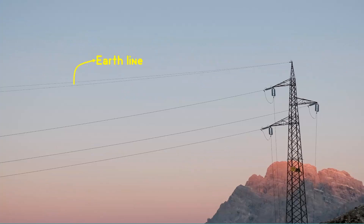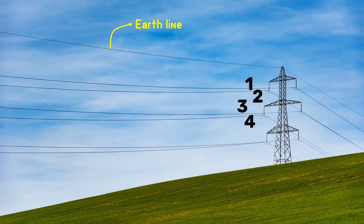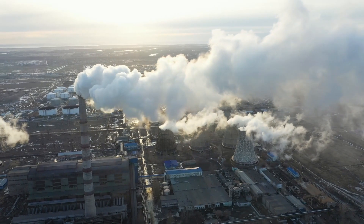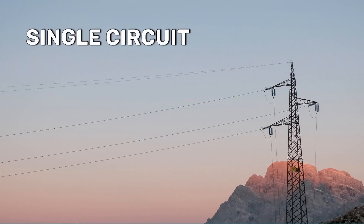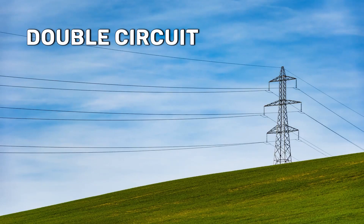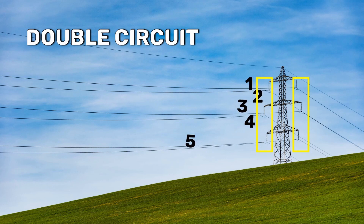Do you know how many transmission lines a single tower supports? Sometimes we see three conductors and sometimes six. Power plants generate three-phase electricity. Therefore, a single circuit transmission line has three sets of conductors. A double circuit transmission line has two independent circuits, which means it has six conductors.